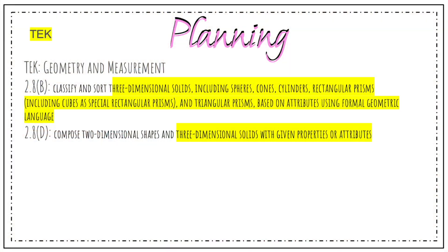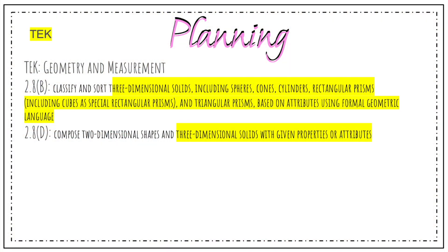The TEKS covers 3-dimensional solids including spheres, cones, cylinders, rectangular prisms — including cubes as special rectangular prisms — and triangular prisms, based on attributes and using geometric language. We need to sort and classify those, and students also need to compose 3-dimensional solids with given properties and attributes.